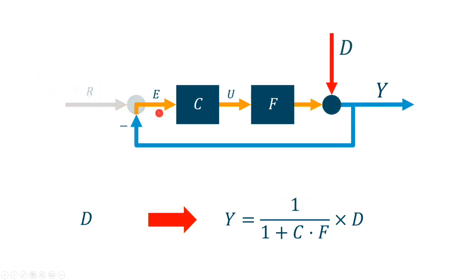The output Y is a superposition. Now, if we put the reference R to zero and focus on the transfer function from the disturbance input to the output Y, the closed loop transfer function gives 1 divided by 1 plus Cf.